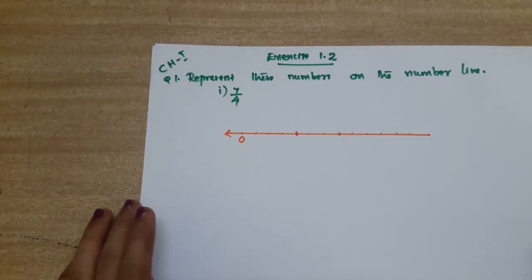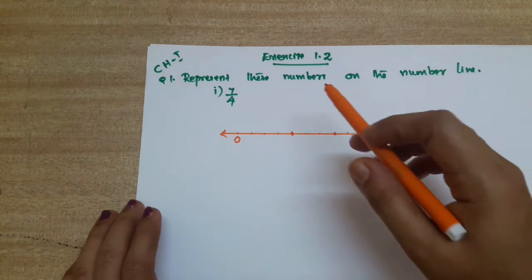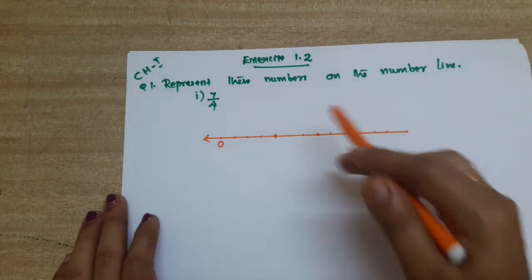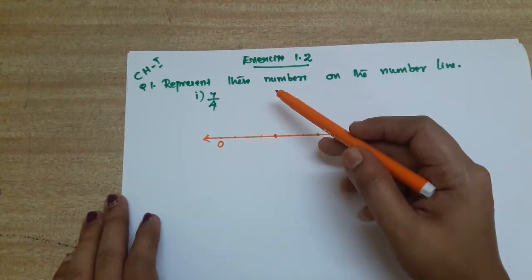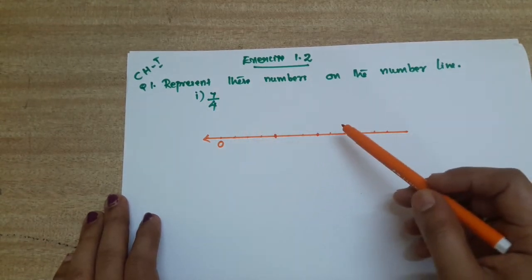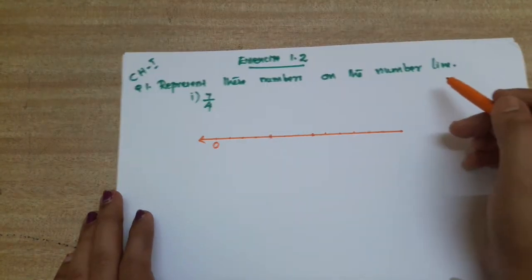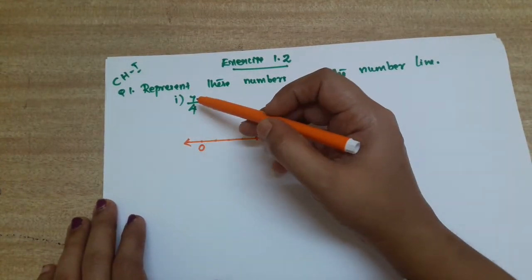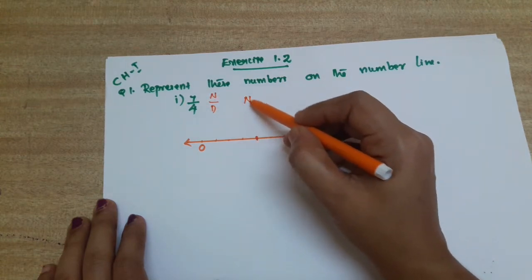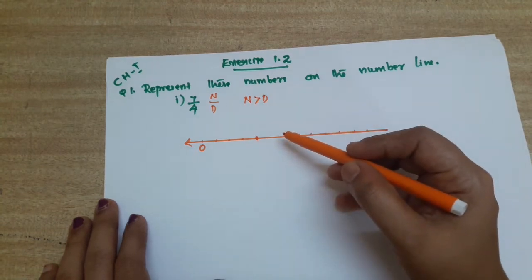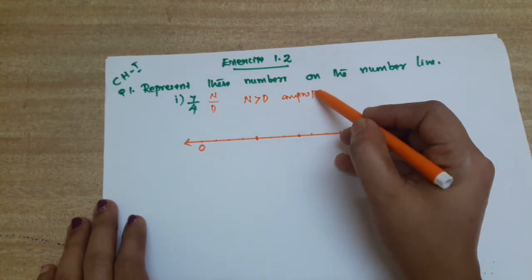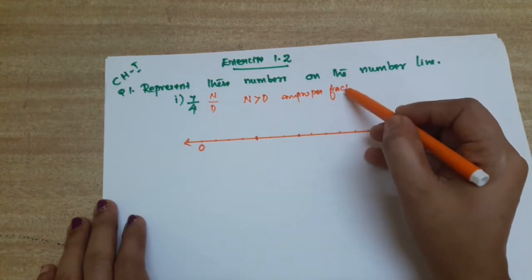Hi all, today we are going to do exercise number 1.2 — the second exercise of the first chapter. The first question is to represent these numbers on the number line. First is 7 by 4. See here, the numerator is bigger than the denominator, so that means it is an improper fraction.